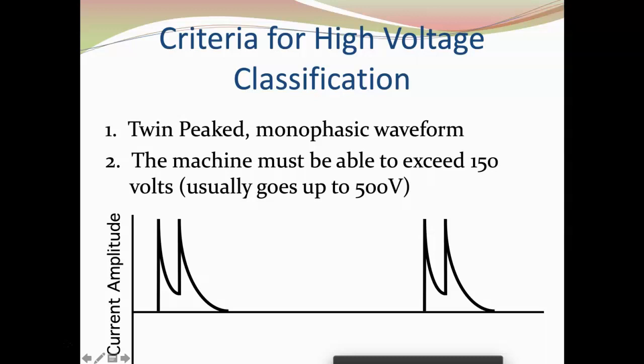We also know that the high voltage device is capable of delivering up to 500 volts. We can look at that and go, oh my goodness, that's a lot of voltage to be delivering to a patient. The great thing about high voltage pulse stimulation — and the keyword is pulsed — is that the electrical stimulation being delivered to that patient is going to be pulsed. In terms of its name, high voltage, it's capable of delivering up to 500 volts, but it will not actually do that, and we'll talk about why.